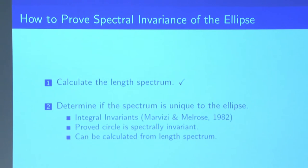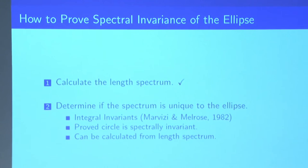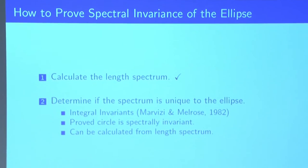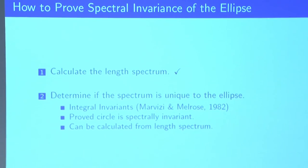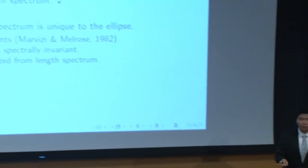But we do have some hopes. There are these quantities calculated by Marvizi and Melrose, known as integral invariants, that we're able to prove that the circle is spectrally invariant. And they can be calculated from our length spectrum. And so our hope is that we can use these integral invariants like Marvizi and Melrose, calculate them from our length spectrum, and hopefully prove the spectral invariance of the ellipse in a similar manner.